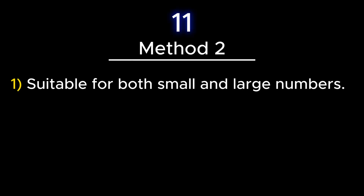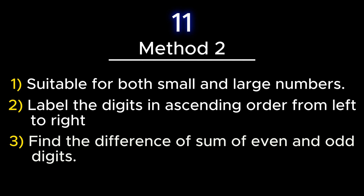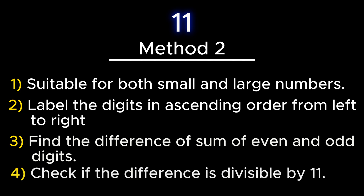The second test is suitable for large numbers, that is numbers with more than 5 digits, but it can still be applied for small numbers. To check whether a number is divisible by 11, the digits are labelled with counting numbers from left to right, i.e., from highest place value to lowest place value. Afterwards, the difference of the sum of digits at odd places and even places is obtained. If the difference is divisible by 11, then the given number is also divisible by 11.